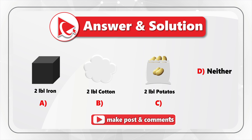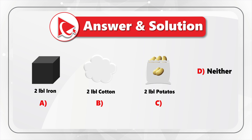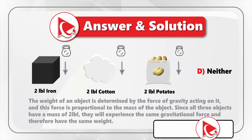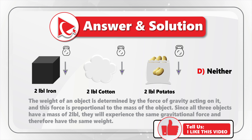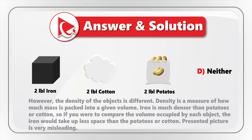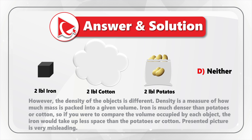As you might have figured out, all three objects — two pounds of iron, two pounds of potatoes, and two pounds of cotton — will have the same weight. The explanation is that the weight of an object is determined by the force of gravity acting on it, and this force is proportional to the mass. Since all three objects have a mass of two pounds, they will experience the same gravitational force and therefore have the same weight. But the confusion here is that the density of these objects is different. Density is a measure of how much mass is packed into a given volume.